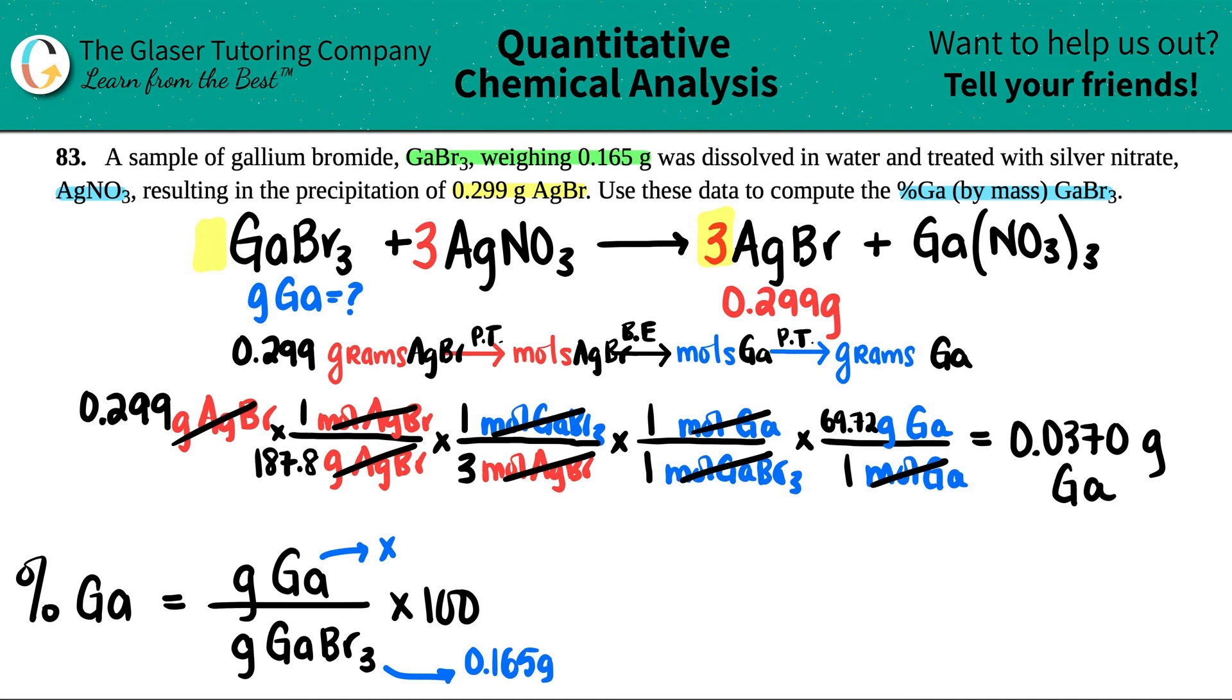So now I know this is 0.0370 grams - part divided by whole times 100. Let's do it out. Percent of gallium equals, since I now have the correct units and they're both in grams, I have 0.0370 on the top, and I have 0.165 on the bottom, and then times by 100. I get 22.4. So percent gallium equals 22.4, and yeah, three sig figs. We're good to go.